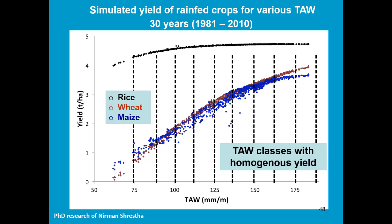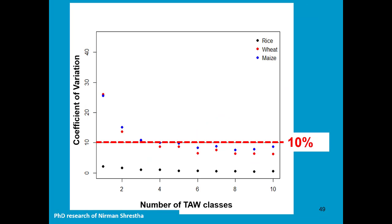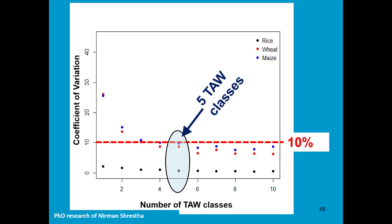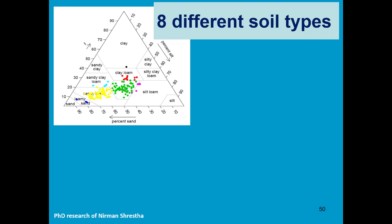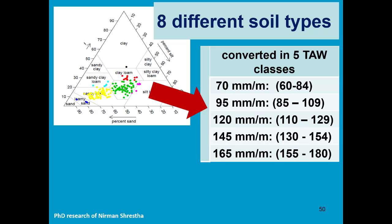Now, how many classes of tau do we have to consider? Here you see the coefficient of variation of the predicted error for rice, wheat, and maize for different tau classes. When we have 5 tau classes, the coefficient of variation drops below an acceptable range of 10%. So instead of considering 8 different soil types, we are going to consider only 5 different tau classes for the homogeneous zones.